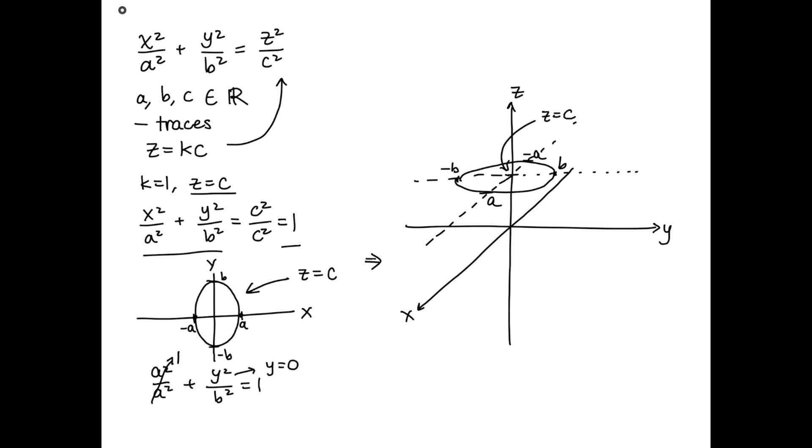We can let, for example, y equal to zero, in which case we would get x squared over a squared is equal to z squared over c squared. And what this gives us is actually just going to be a pair of lines.